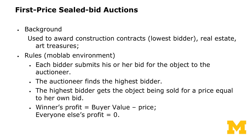Let me go through the first-price sealed bid auction, which you participated in as a bidder. This form of auction is often used to award construction contracts and real estate or allocate art treasures. In the MobLab environment, each bidder submits his or her bid for the object to the auctioneer — the object is an abstract object. The auctioneer finds the highest bidder, who wins the auction. The highest bidder gets the object for a price equal to her own bid. The winner's profit is your value — how much the object is worth to you, which we induce in the lab — minus the price you pay, which is your own bid. Everyone else's profit is zero.